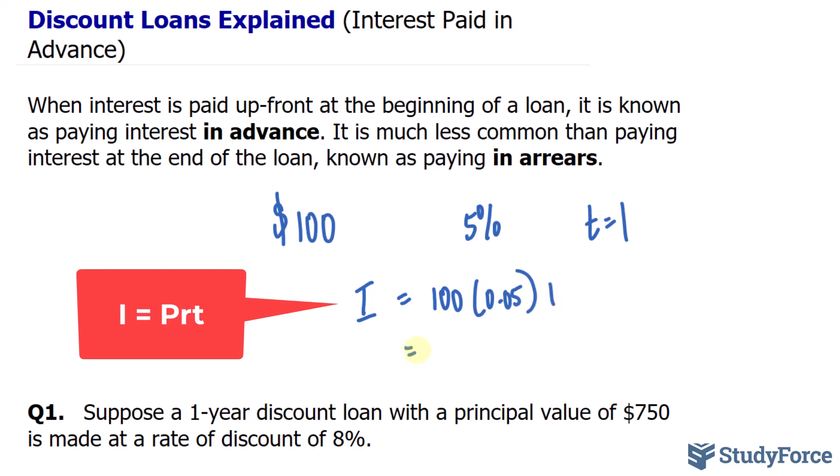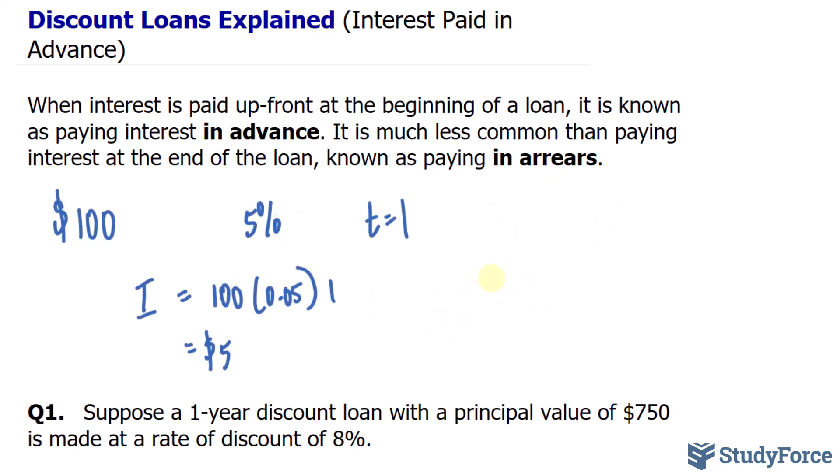And so, at the end of the year, you would pay $5 extra dollars plus the principal. Now this idea of paying up front means that rather than paying $5 at the very end, you pay the $5 right from the beginning. So rather than receiving $100 at day 1, you receive 95.